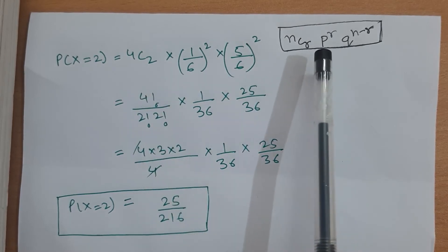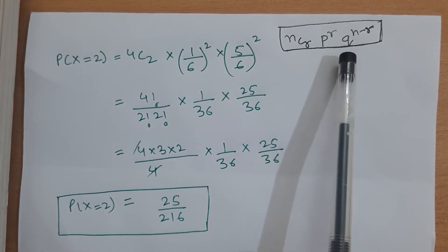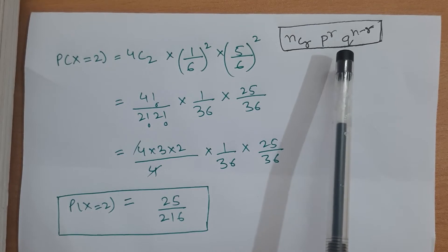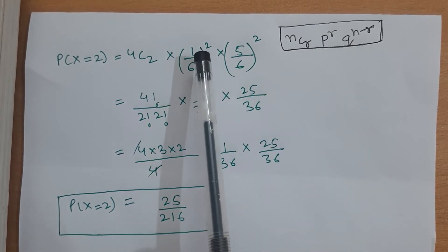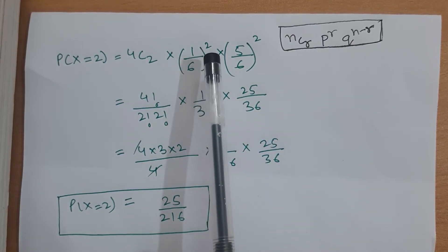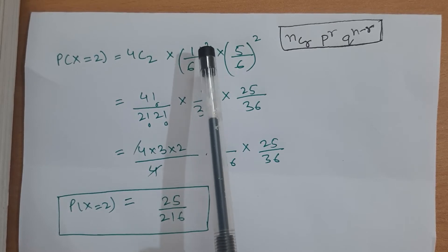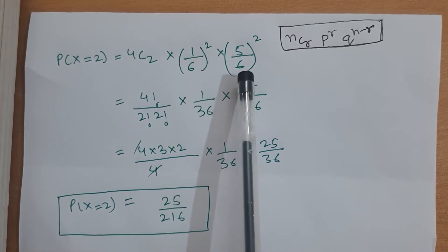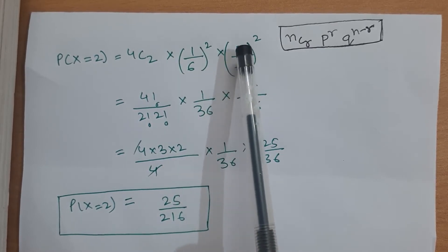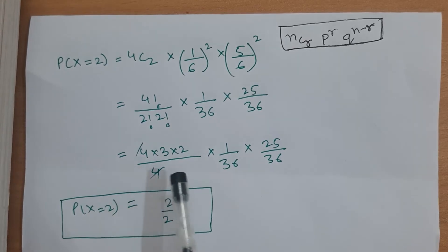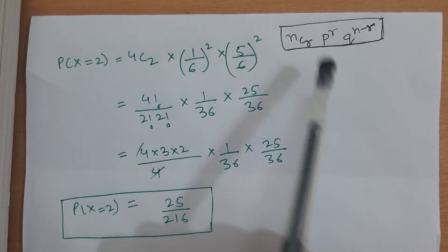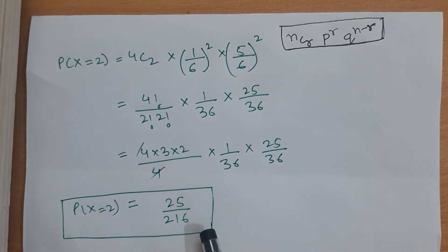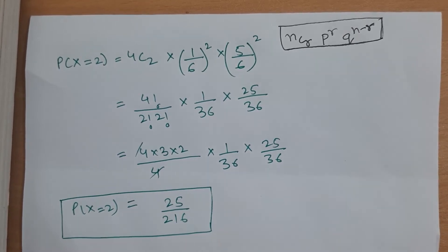The probability of success p = 1/6 (getting a 6), and probability of failure q = 5/6. Substituting these values, the probability that 6 shows up exactly twice is 25/216.